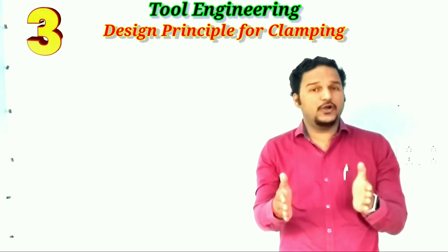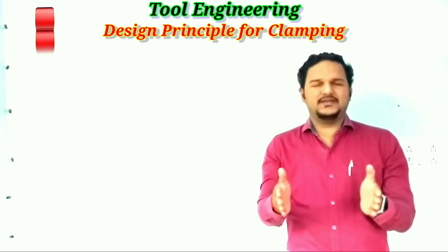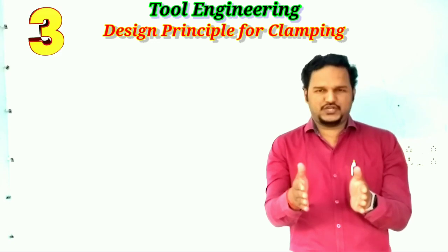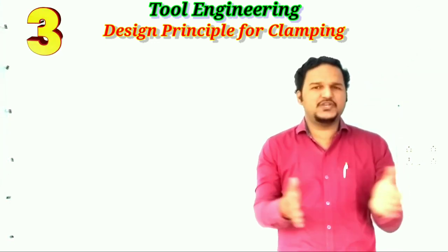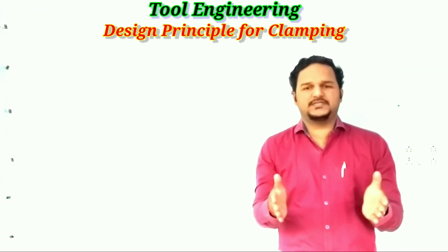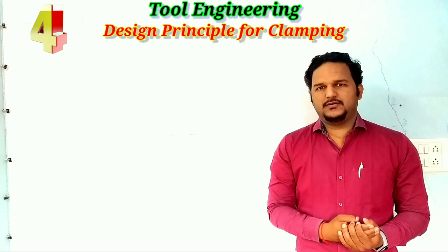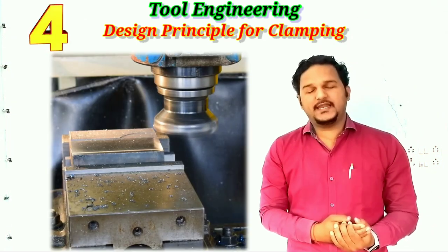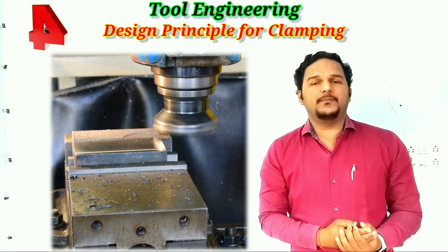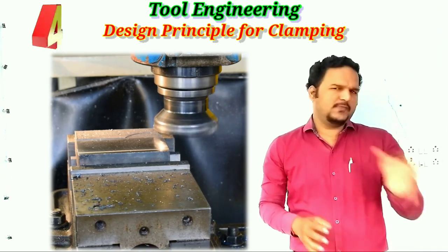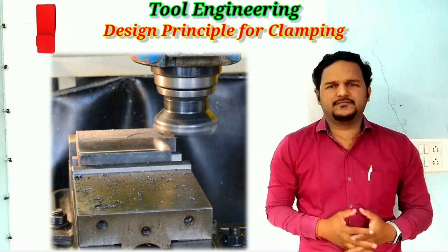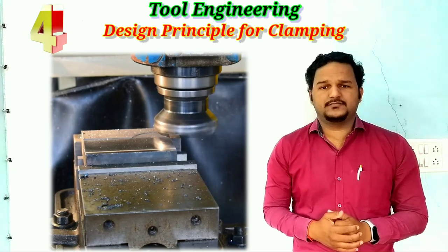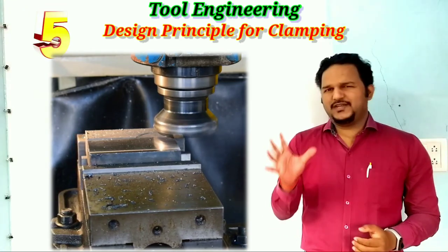The clamping pressure must only hold the workpiece and should never be great enough that the workpiece may get damaged, deformed, or have its dimensions changed. Fourth point: the clamping and cutting forces should be directed toward the locating pins; otherwise the workpiece may get bent or forced away from the locating element during machining.